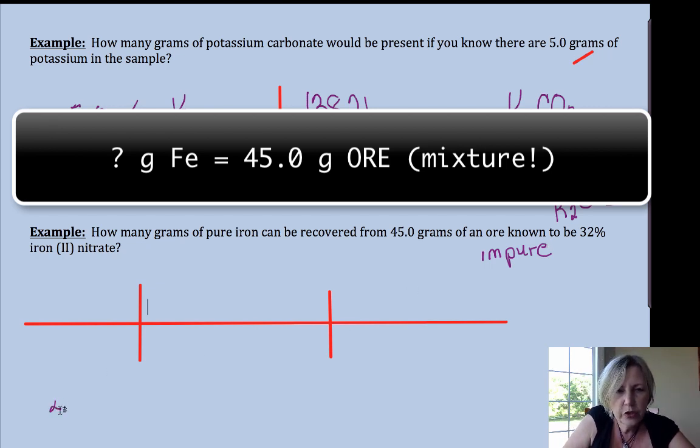So what we have to do is get from those 45 grams of ore. If we want to find pure iron, iron is bound up in iron(II) nitrate.